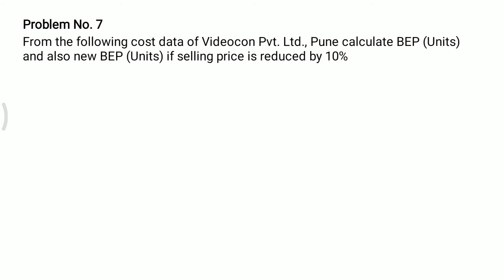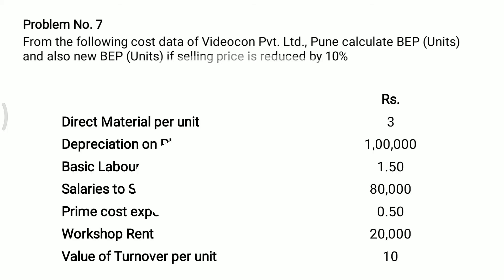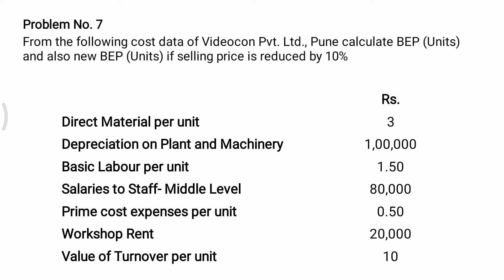Today we will see problem number seven from marginal costing. The problem is from the following cost data of Videocon Private Limited. We need to calculate BEP units and also new BEP units if selling price is reduced by 10 percent. Additional information: direct material per unit rupees 3, depreciation on plant and machinery rupees 1 lakh, basic labor per unit rupees 1.50, salaries to staff middle level rupees 80,000, prime cost expenses per unit rupees 50, workshop rent rupees 20,000, and value of turnover per unit rupees 10.